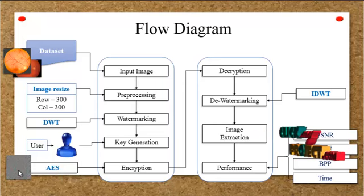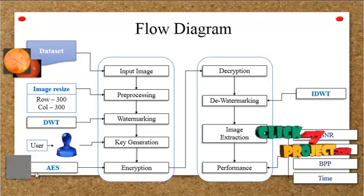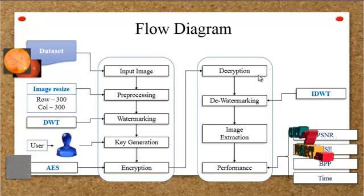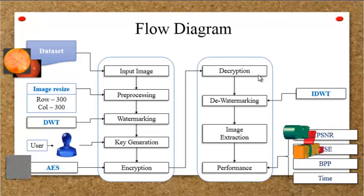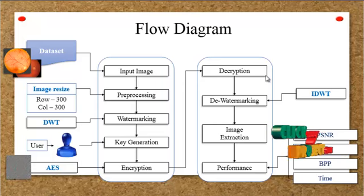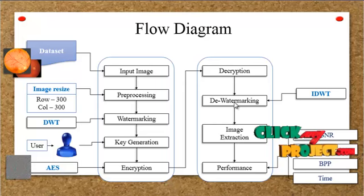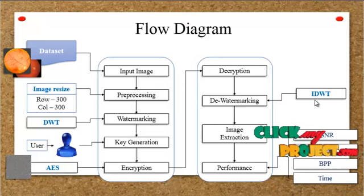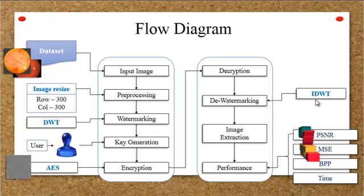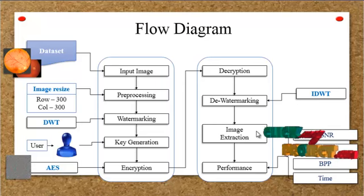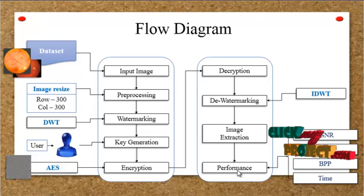The encrypted image will look like this. After encryption, decryption is carried out. In the decryption step, the user provides the key — if the encryption key and decryption key are the same, it proceeds to decryption; otherwise the process is aborted. After decryption, de-watermarking is carried out using IDWT to extract the data from the image.